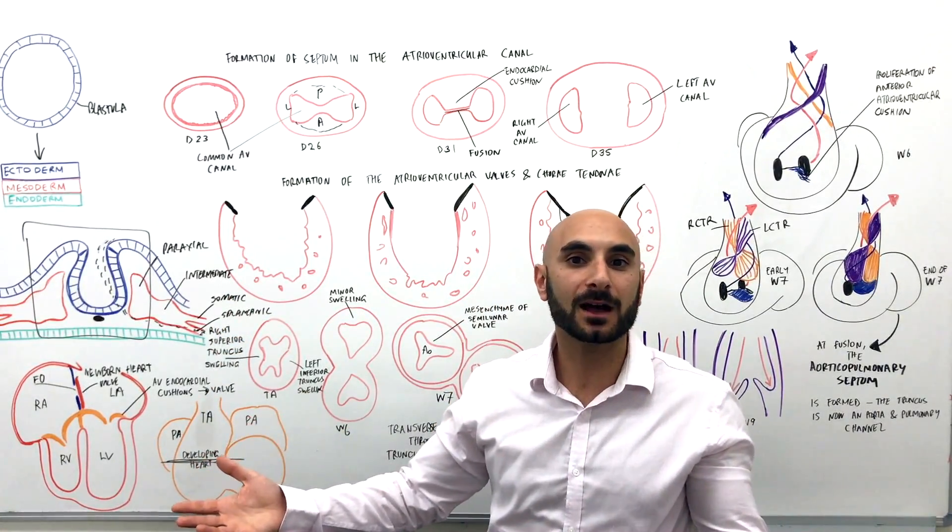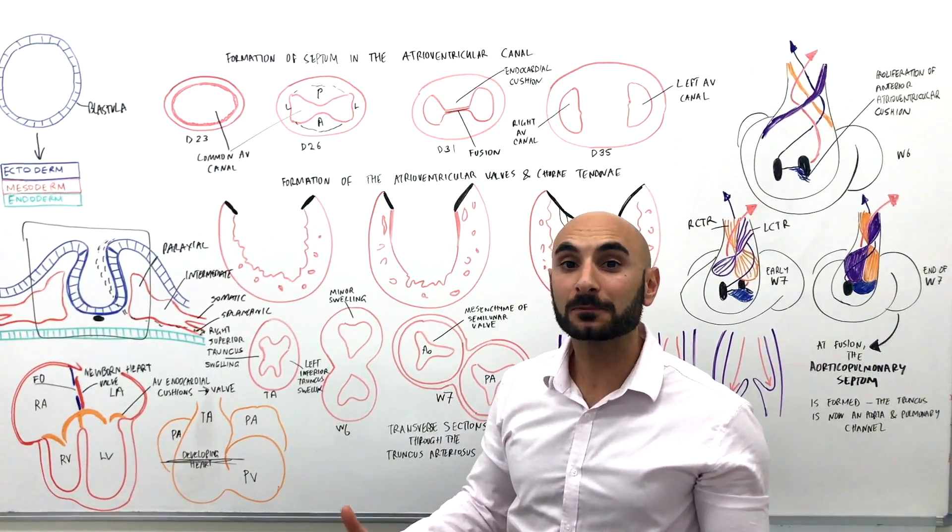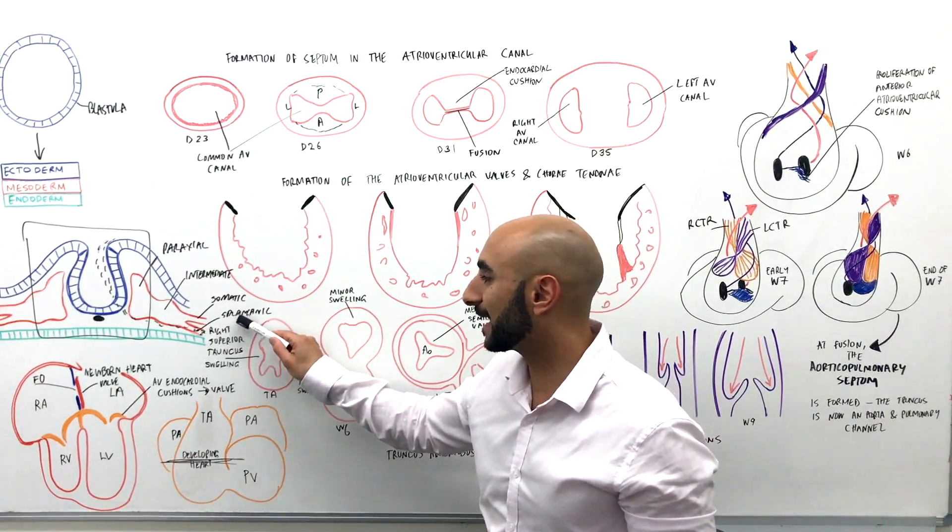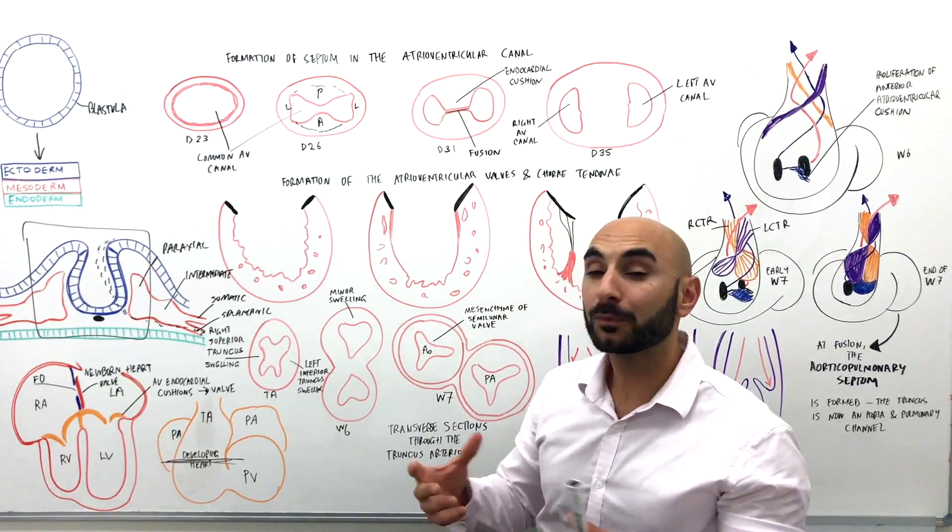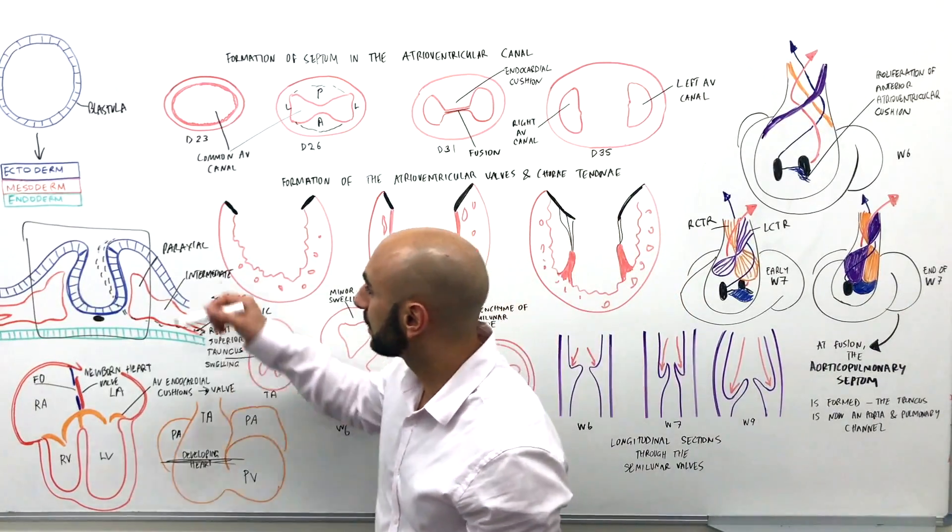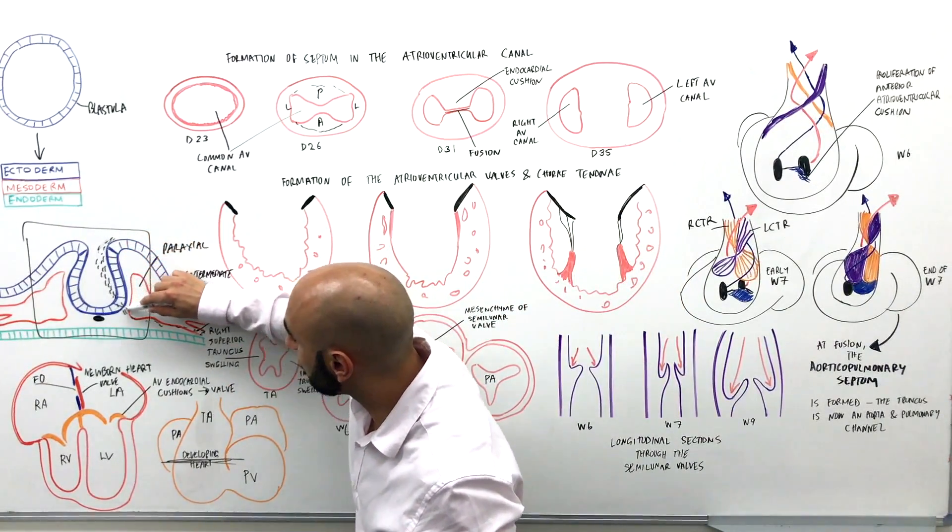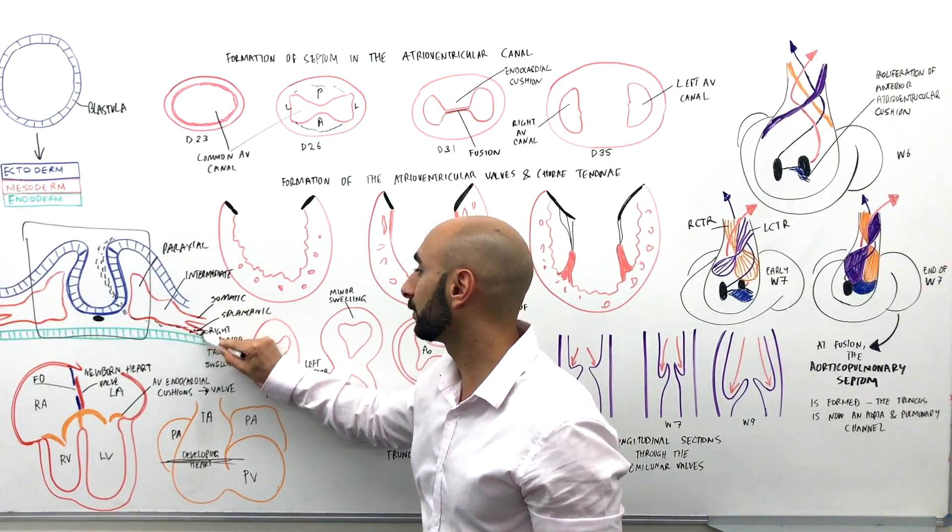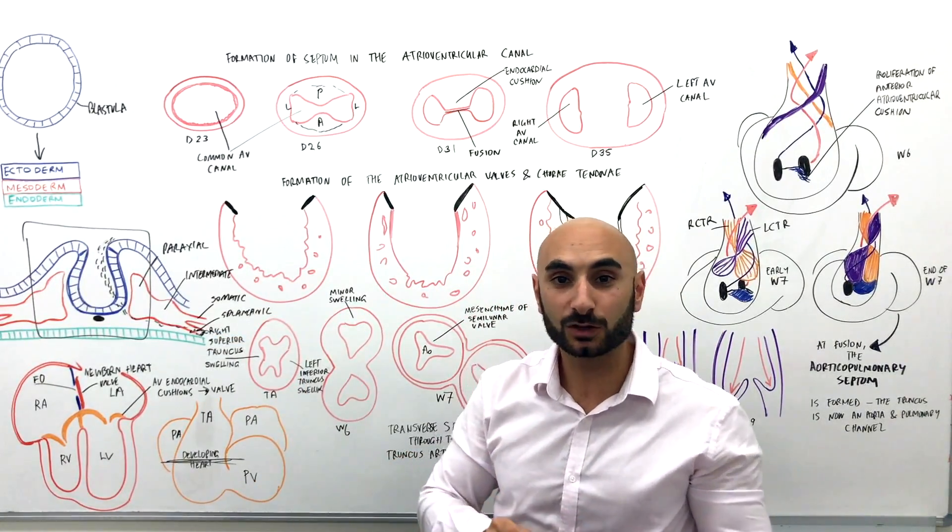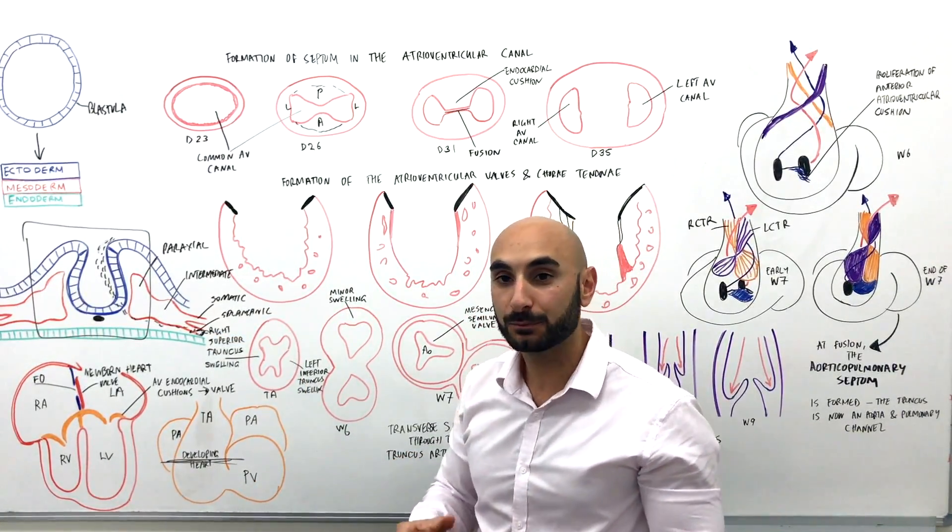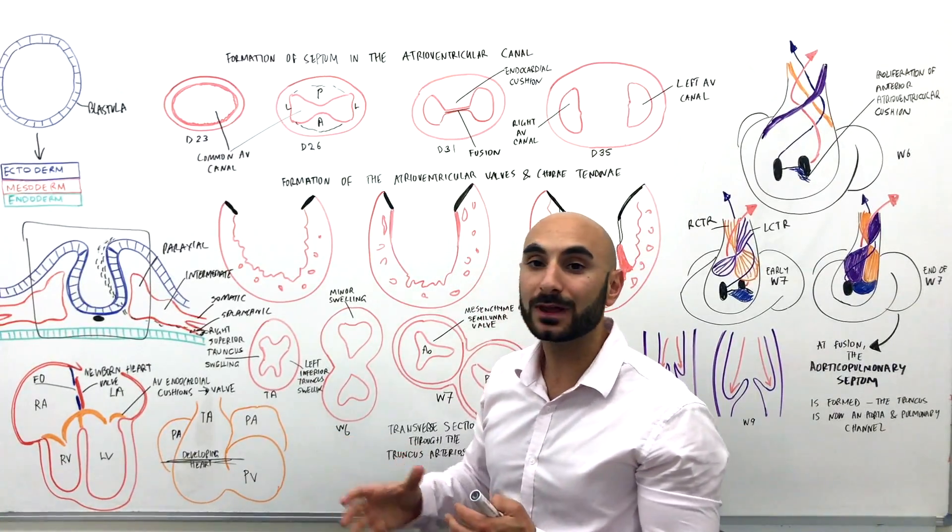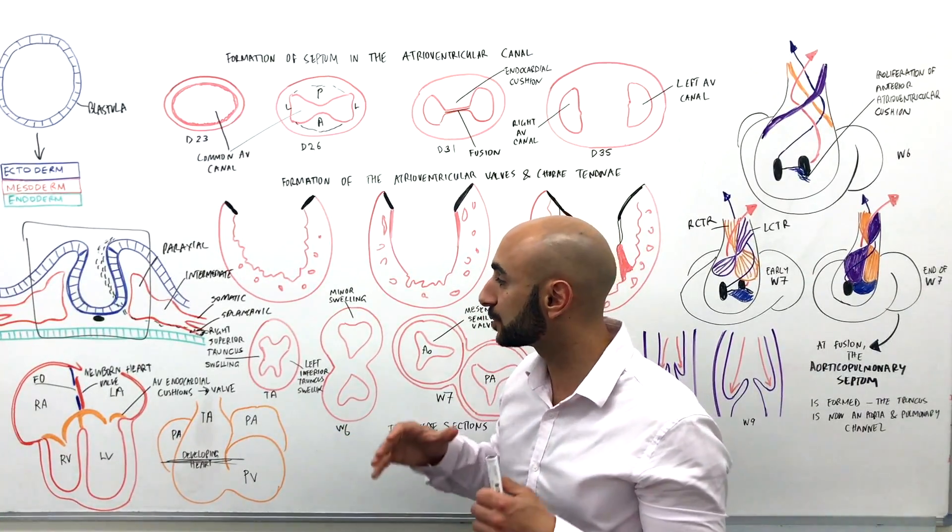So the first high-yield point is: where does the heart come from? Where does the heart develop from? It develops from splanchnic mesoderm. But more precisely, what happens is that cells migrate down and reside and proliferate at the splanchnic mesoderm forming the primary heart field.